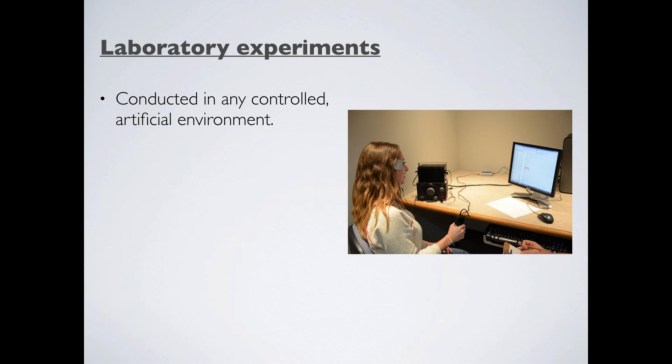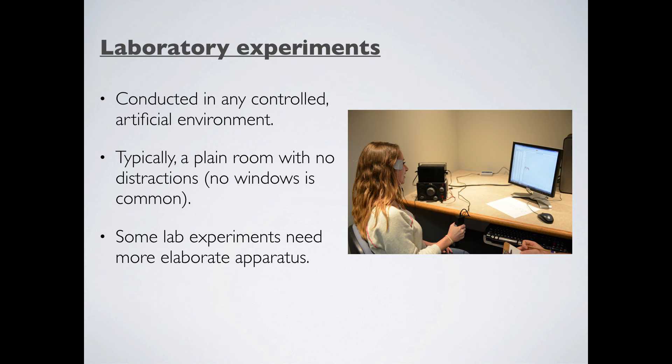We ask our participants to come out of their natural habitat and into a universe of our creation. Now there's no universally agreed standard for what a lab should look like. So typically it's just going to be a plain room with no distractions in it. It's probably best if it doesn't have a window in it as the researcher can't really control what might happen outside. We might have a car crash happen or somebody quite interesting might walk past or there might be an alien landing or something like that. We simply don't know that anything that does happen outside would be a distraction. Now a typical lab experiment would be conducted in a small room, something kind of like this picture you can see here. Typically a computer on a simple desk, something like that.